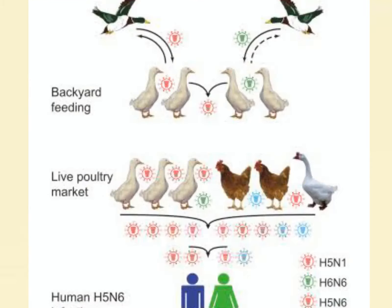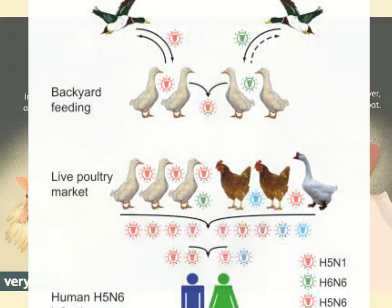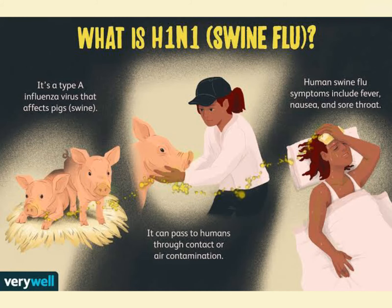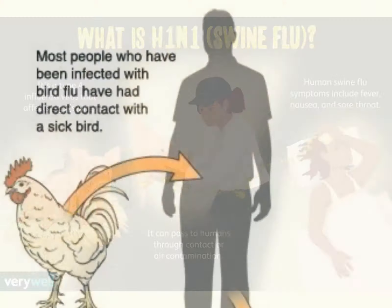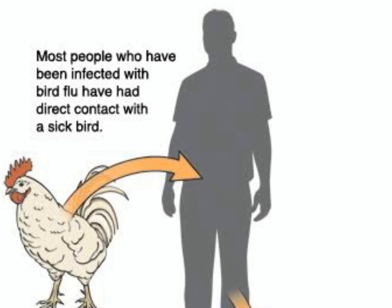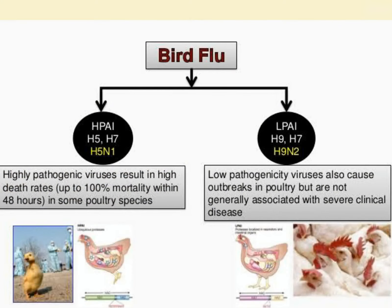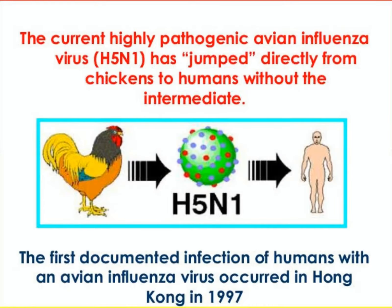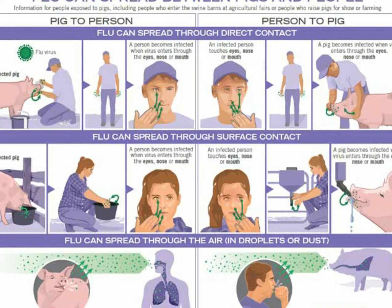The most common types of zoonotic influenza are avian, originating from birds, and swine, originating from pigs. Avian flu is caused by influenza A virus and transmission is through direct contact with infected poultry. Based on pathogenicity, avian influenza is divided into high pathogenicity and low pathogenicity. The high pathogenic avian influenza virus is H5N1. Swine flu is also caused by influenza A virus.